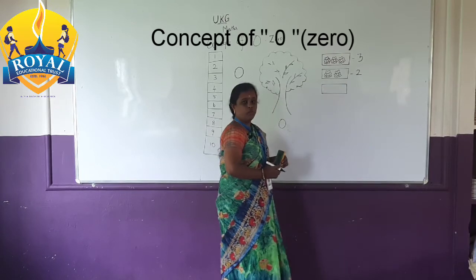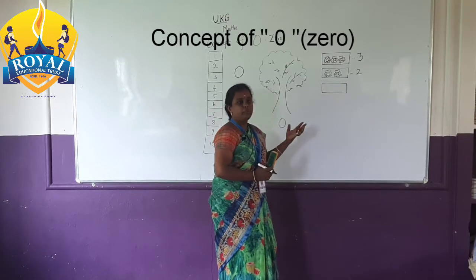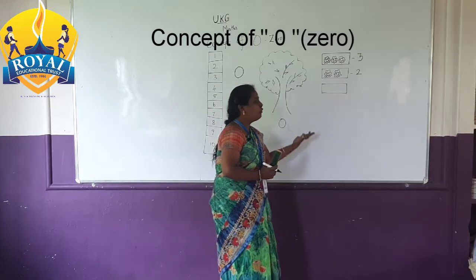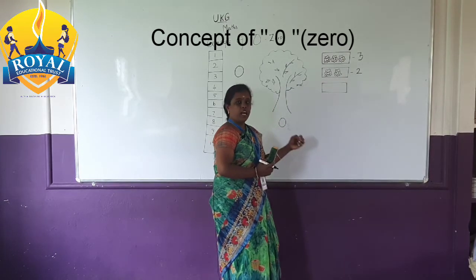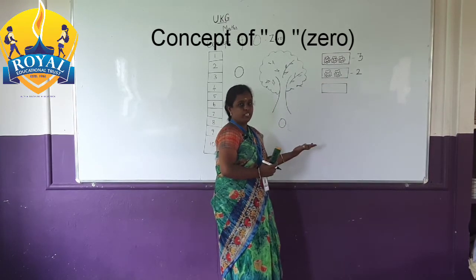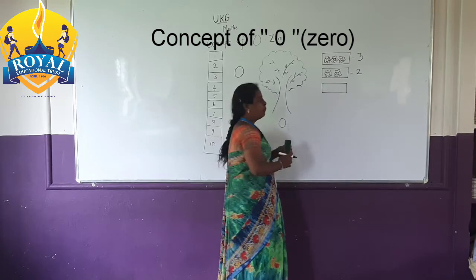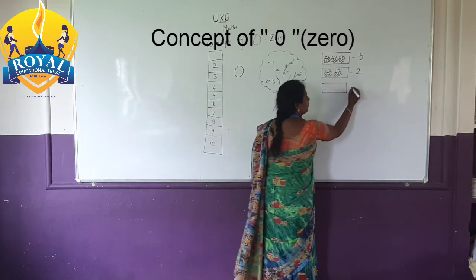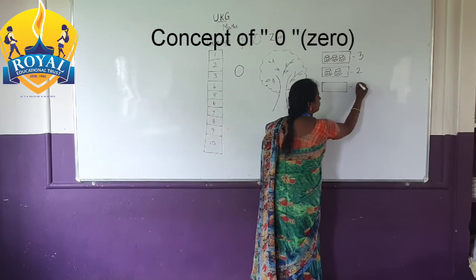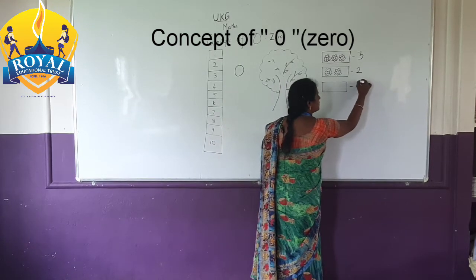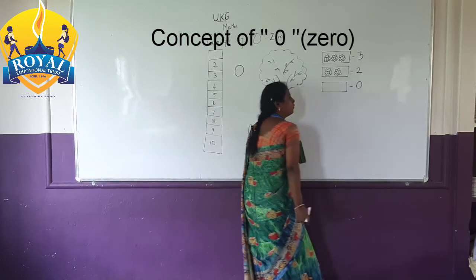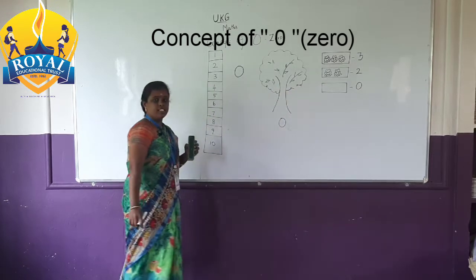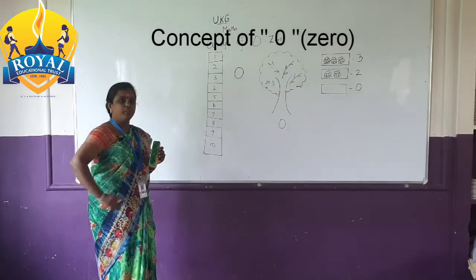Third box is empty — no flowers. So we write 0. The third box is empty, so we write 0.